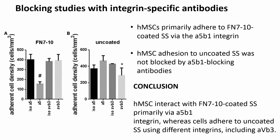They then verified whether the signaling through alpha 5 beta 1 is actually happening. They blocked cells with an anti-alpha 5 antibody, which blocks binding of that integrin to the fibronectin-coated surface, and found that cell density decreased. Blocking other integrins did not show the same effect — only blocking alpha 5 caused a significant decrease in cell density. On uncoated surfaces this effect is not seen. The conclusion is that these cells interact with the fibronectin-coated surface specifically through alpha 5 beta 1 integrin, which is what the authors wanted, as this promotes bone formation.